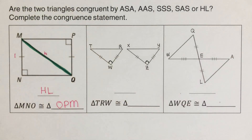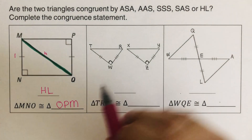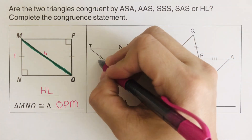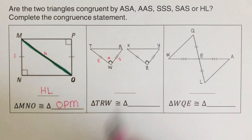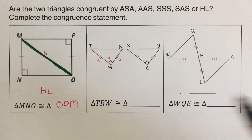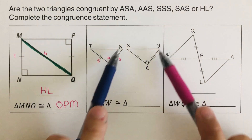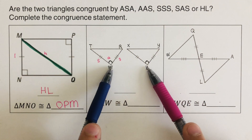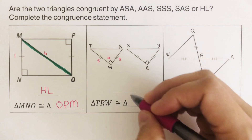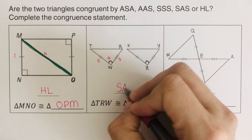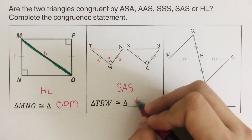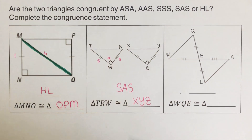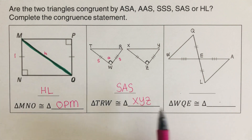Now let's take the next one — this is pretty straightforward. We get a side, an angle, and a side, and it matches on the other side. So this is SAS. The triangle is named T, R, W, and the matching triangle is X, Y, Z. So triangle TRW is congruent to triangle XYZ.